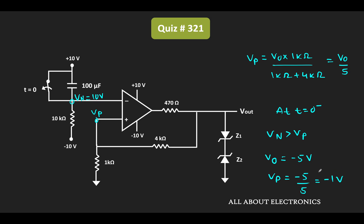At time t equal to 0, this switch gets opened. Now this capacitor starts charging, and because of that the voltage at this node will start changing. At one point, when the voltage at this node becomes less than -1V, there will be a transition in the output. We need to find time t1 at which the transition in the output of this op-amp will occur.